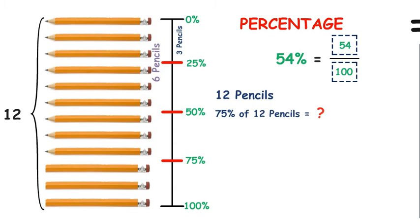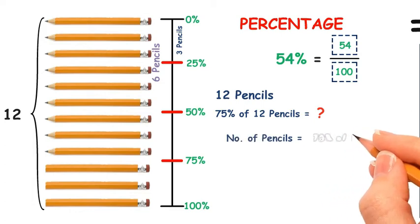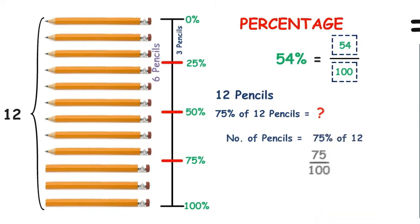75% of 12 pencils equals 9. We can write mathematically: 75% of 12, 75 out of 100 times 12.